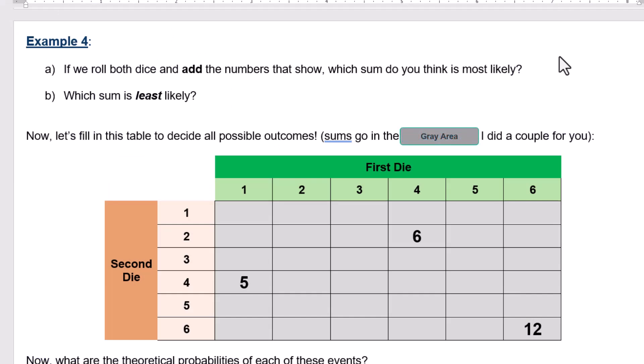Actually, give me one second. Okay, I think I like that a little bit better. You have the different colors of the different dice. So the first die is green, the second die is kind of an orange, so that way if you roll a one on the green die and a one on the orange die, you're gonna get a two overall.